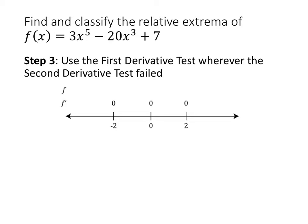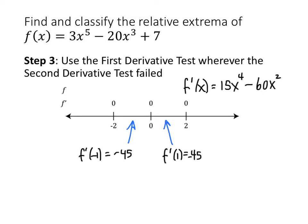So we go back and use the first derivative test to test the critical value x equals 0. We pick a number between negative 2 and 0, and a number between 0 and positive 2, then plug those into our first derivative to see whether it changes sign. I chose negative 1 and positive 1, and I get negative 45 for f prime of negative 1, and also negative 45 for f prime of 1. So between negative 2 and 0 the first derivative is negative, and between 0 and 2 it's still negative. That means we have neither a max nor a min at x equals 0.